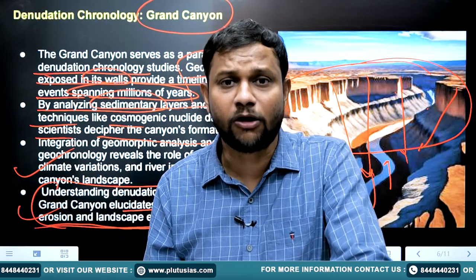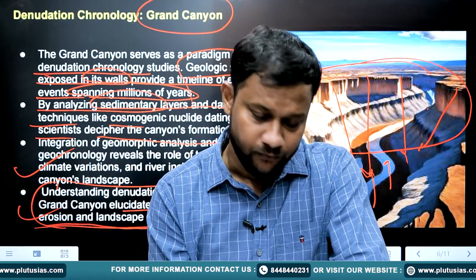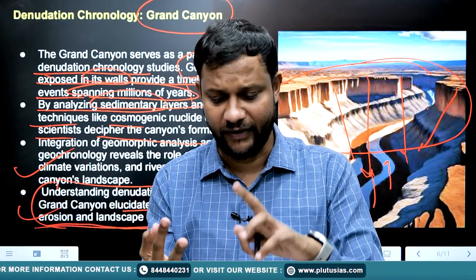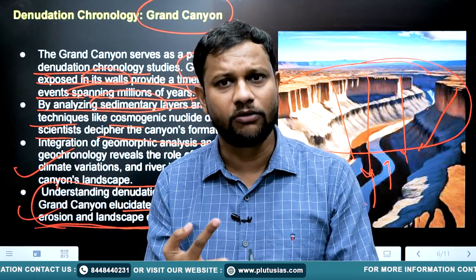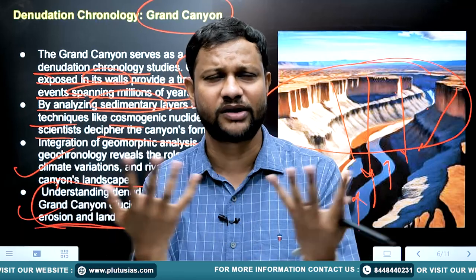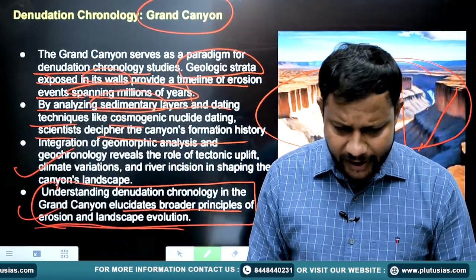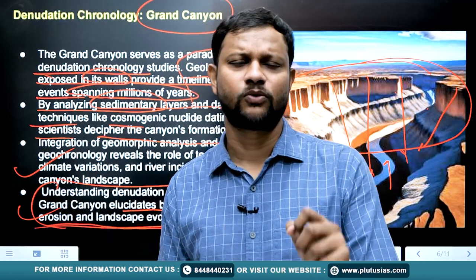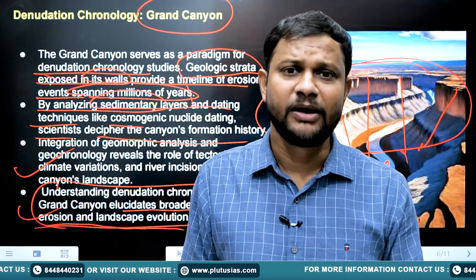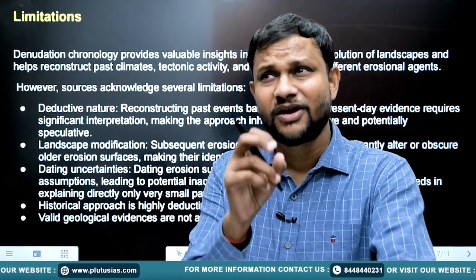This denudation chronology is a very important method to read topography. Using it, we can connect with the history of the Himalayas, the Aravallis, the Thar Desert, the Vindhyas, the Andes, and various world deserts — stretching its application to different parts of the world. However, nothing is perfect, and this technique has its own limitations.